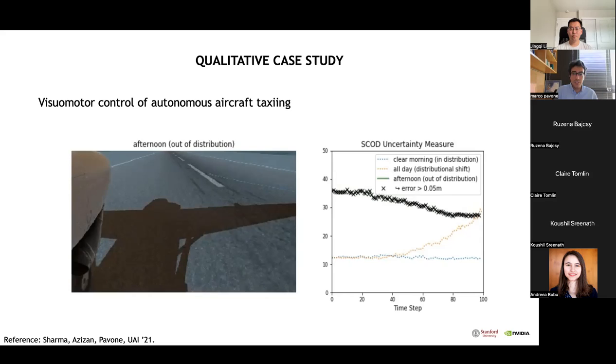That is, at least we know the system is operating in a dangerous situation. Of course, you might ask, why didn't you include images from afternoon or evening as part of the training data set? This is just an illustrative example. The point is that no matter how much care you put in optimizing your training data set, you're always going to have situations in real life that are out-of-distribution. SCOD does a good job in picking up those situations.